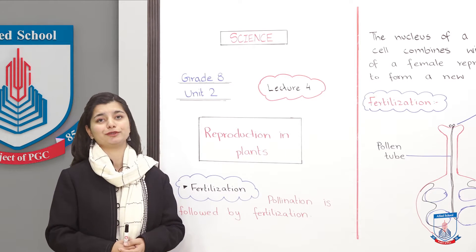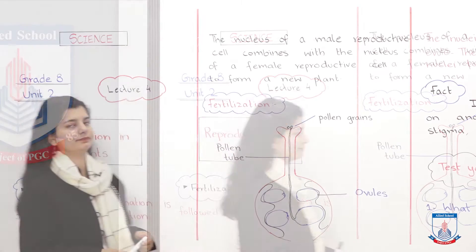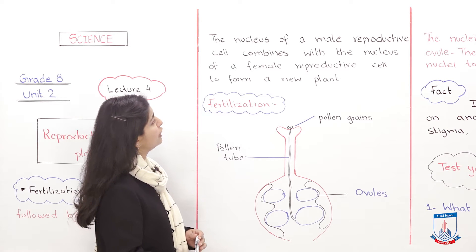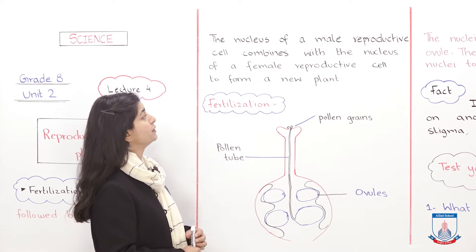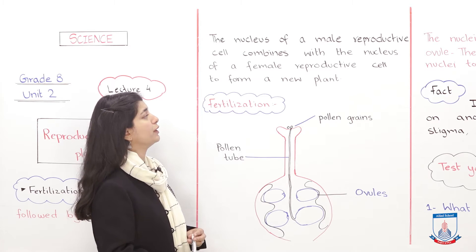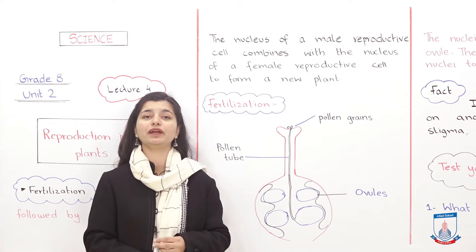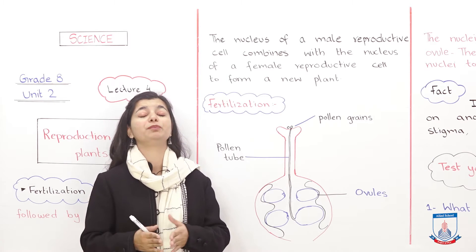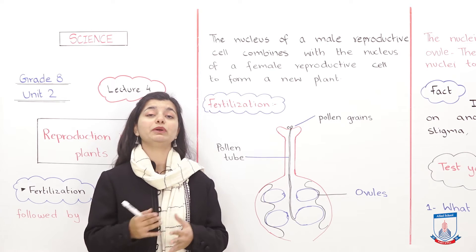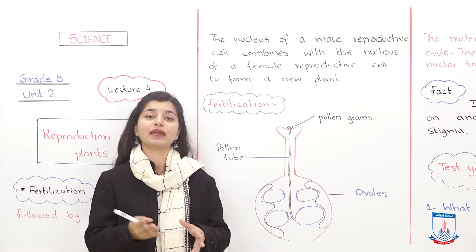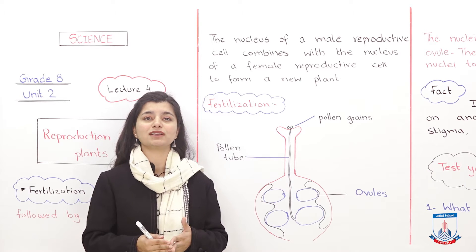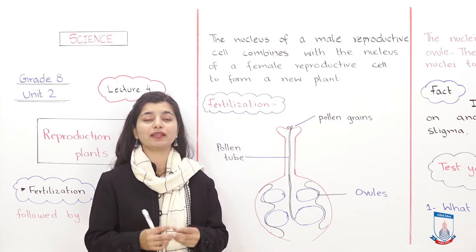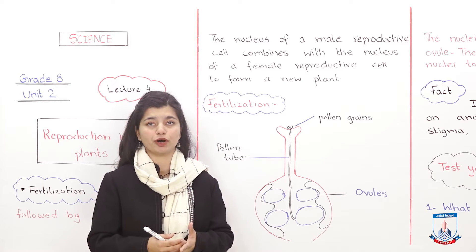Let's also read the definition. The definition of fertilization is: the nucleus of a male reproductive cell combines with the nucleus of a female reproductive cell to form a new plant. The male reproductive cell — also called the gamete, which is the pollen grain — combines with the female reproductive cell, which is the ovule. They both combine and fuse, and then a new plant is formed.